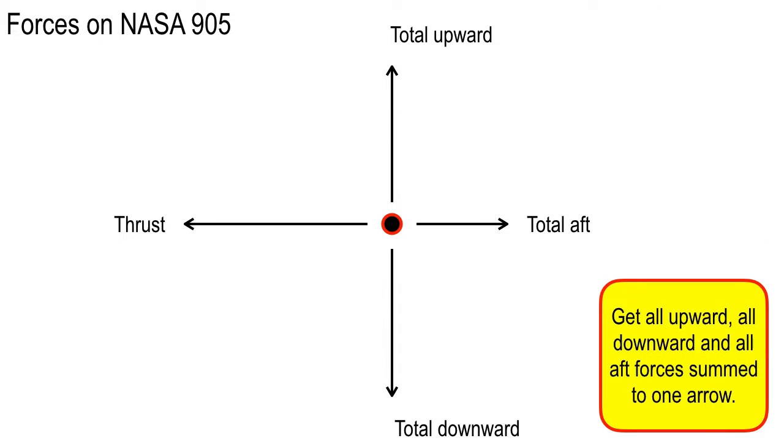The first task that you do is total up all the upward arrows, all the aft arrows, and all the downward ones. There's only one forward arrow, the thrust, so that one was easy. The total upward arrow is the sum of the dynamic lift arrows from the previous slide. The total aft arrow is the sum of the two drag arrows. And the total downward arrow is the sum of the two downward arrows. So I've got them all tucked away into one.